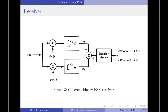We then perform a subtraction of the two correlator outputs to create a difference coefficient L. The coefficient L is fed to a decision device. If L is greater than the threshold of zero, the receiver decides in favor of symbol one — that is, choose symbol one if L is greater than zero. On the other hand, if L is less than the threshold of zero, the receiver decides in favor of symbol zero — choose symbol zero if L is less than zero.